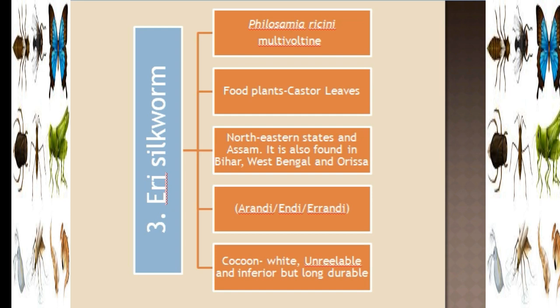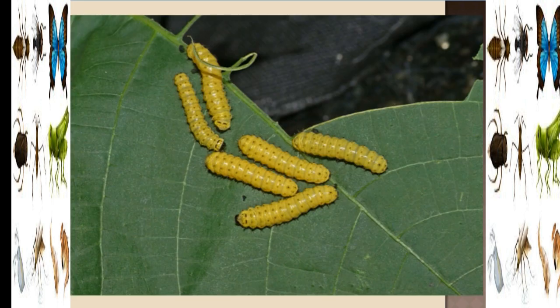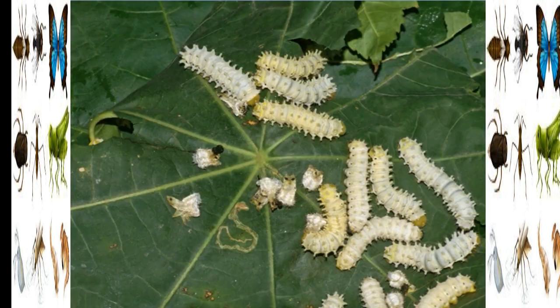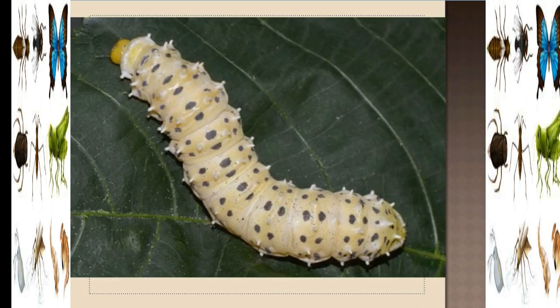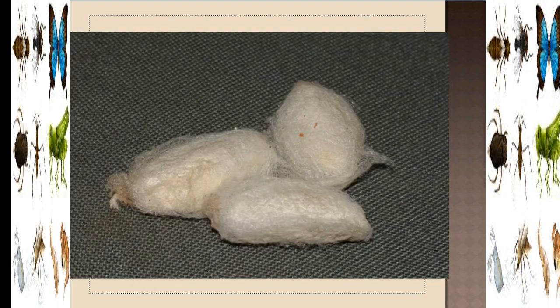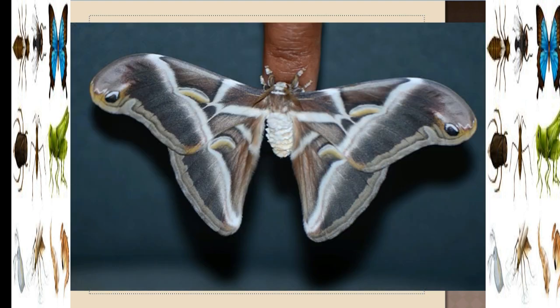In the case of the Eri Silkworm, the cocoon is unreelable and considered inferior compared to other silkworms. Unlike the Mulberry Silkworm and other species which produce a continuous thread from the cocoon, the Eri Silkworm does not give a continuous thread — making it discontinuous. This is the adult stage of the Eri Silkworm.